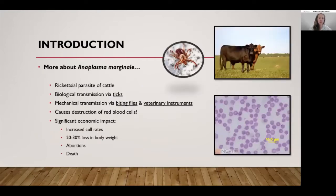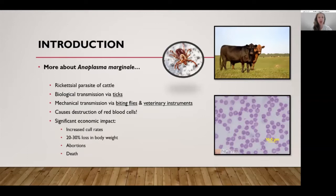The Anaplasma marginale organism is the causative agent of anaplasmosis. It is technically considered to be a rickettsial parasite of cattle, meaning it is an intracellular parasite that likes to infect red blood cells specifically. The organism is primarily transmitted by ticks in the environment. The American dog tick, or Dermacenter tick, is the primary tick in our region that transmits the disease.